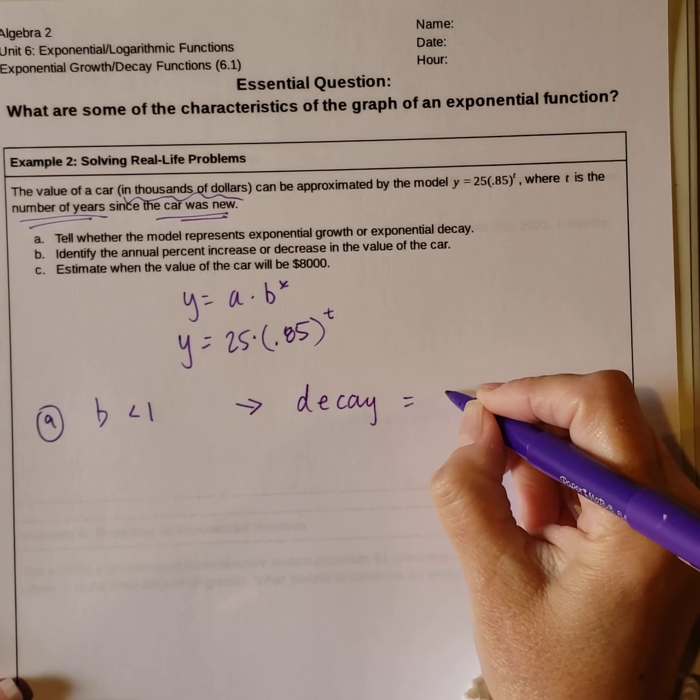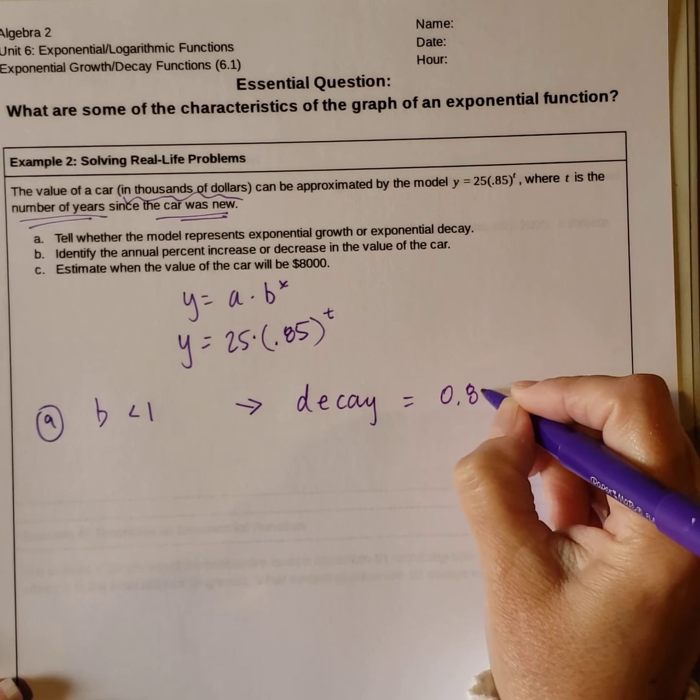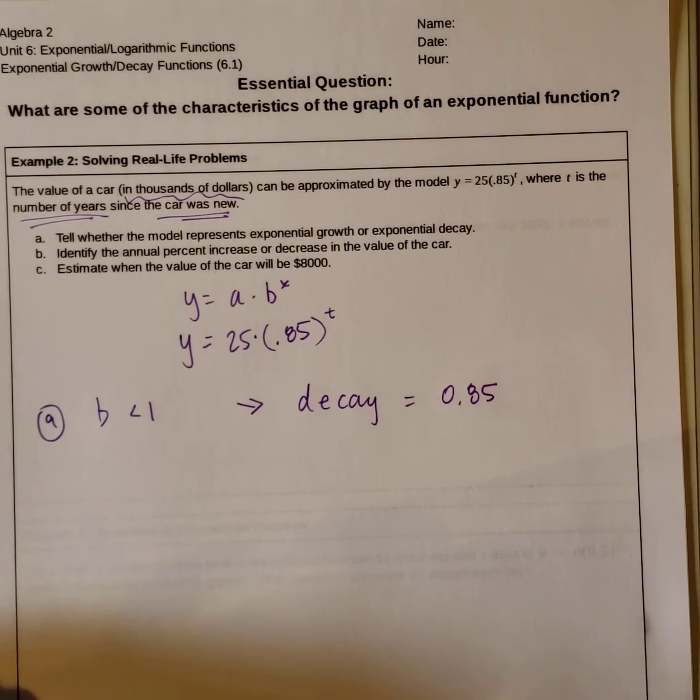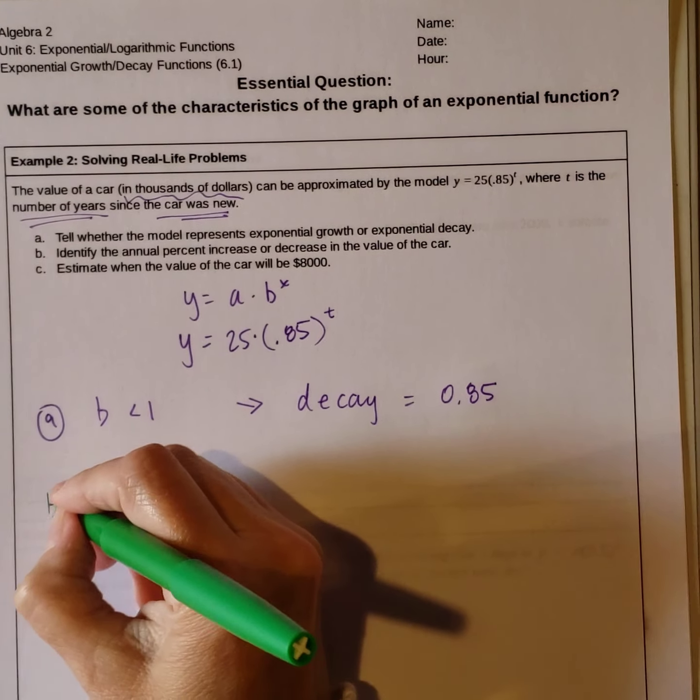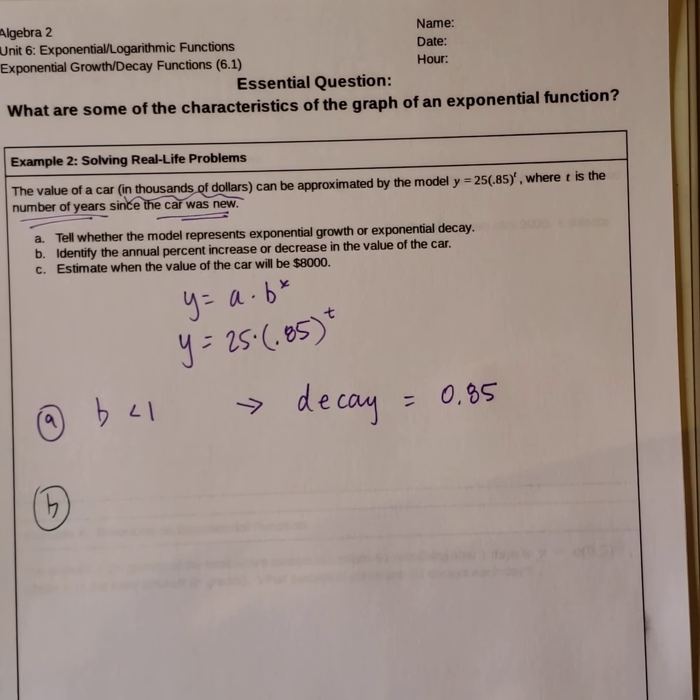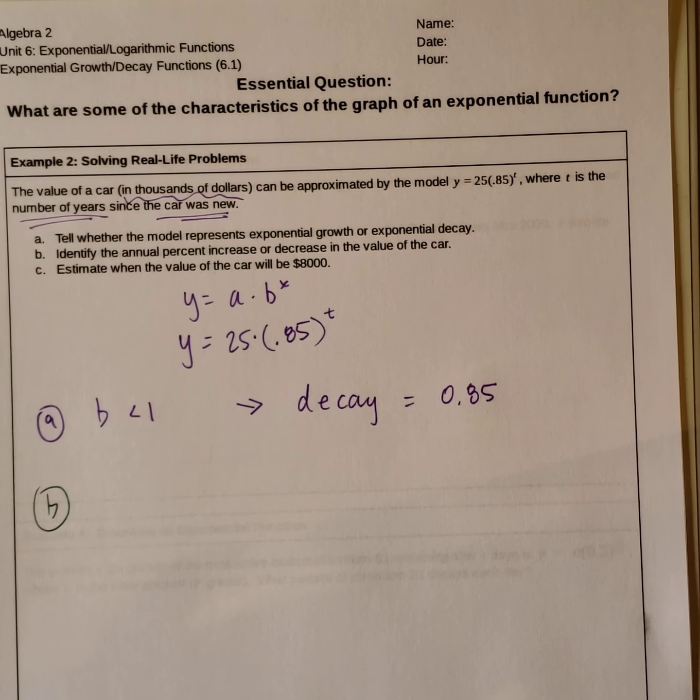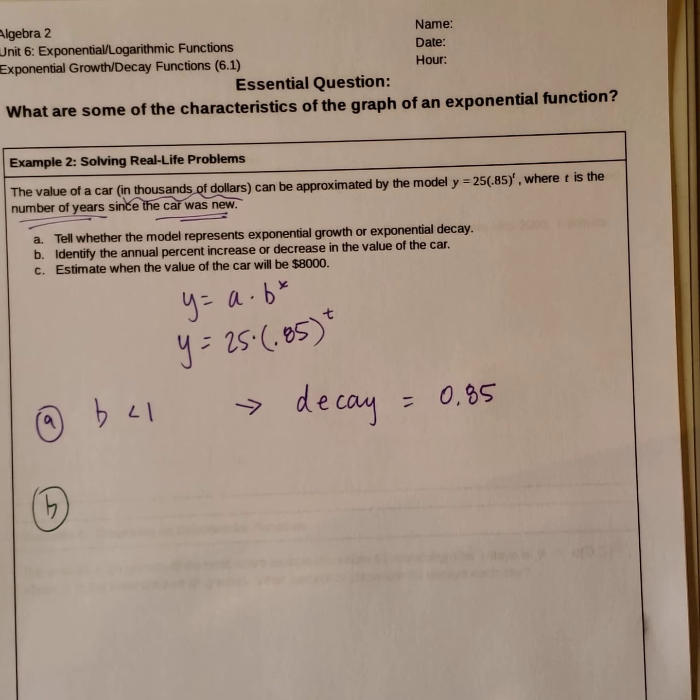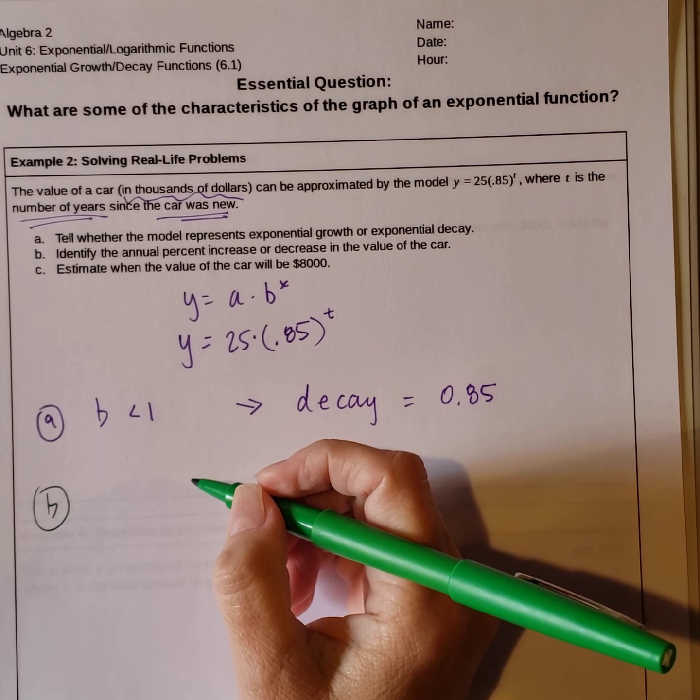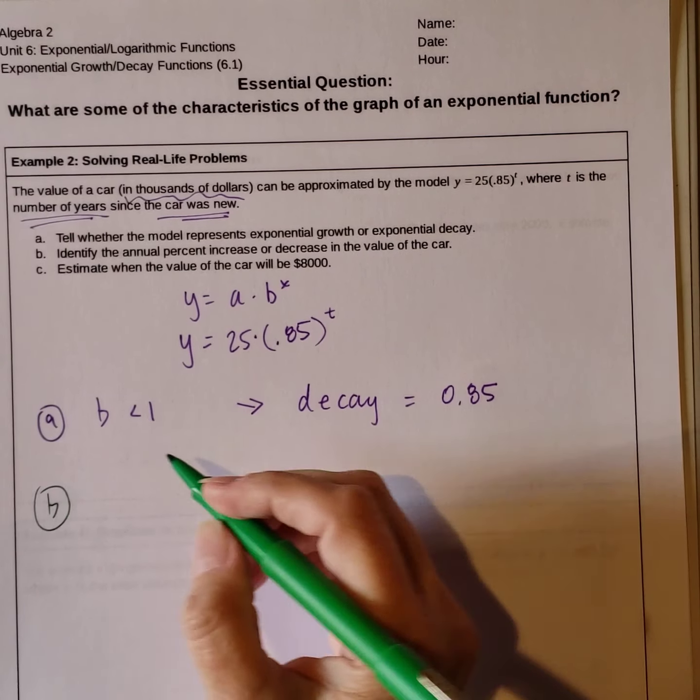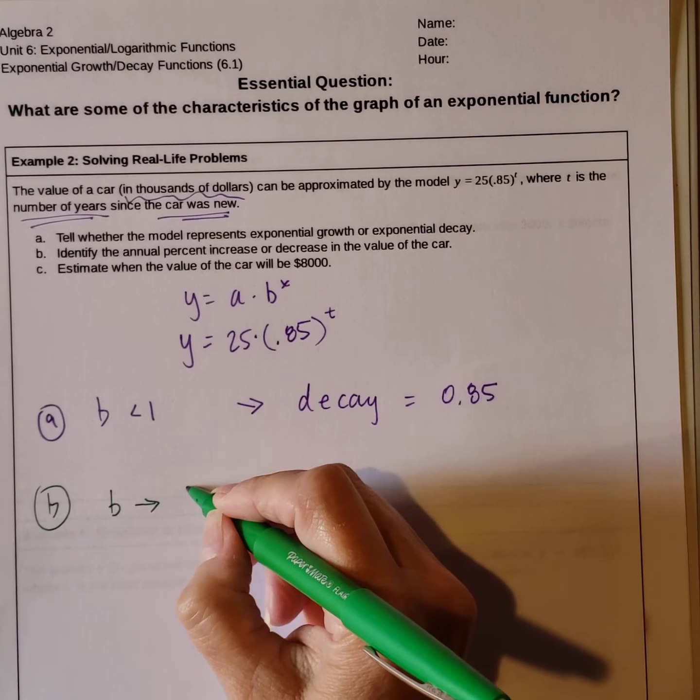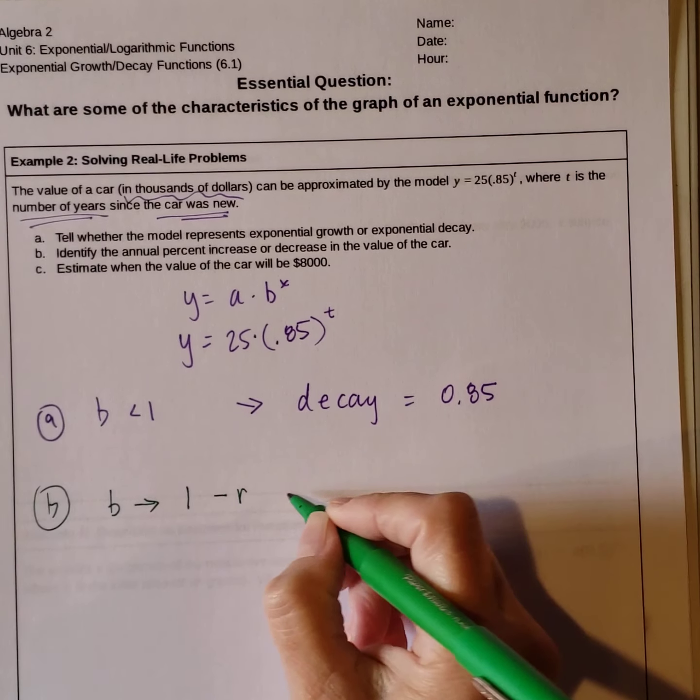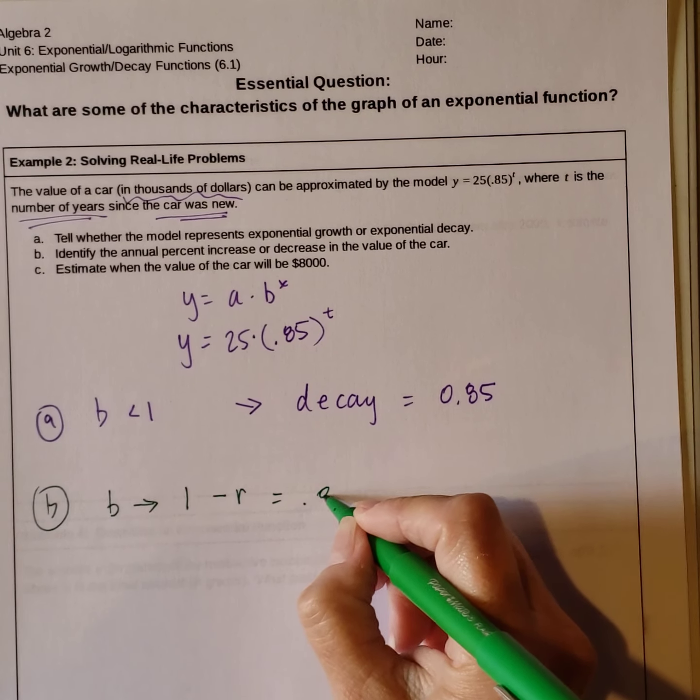And our decay is equal to .85. So part b asks us to identify the annual percent increase or decrease in the value of the car. Since we have decay, our b that we're looking at is 1 minus r, and this is equal to .85.